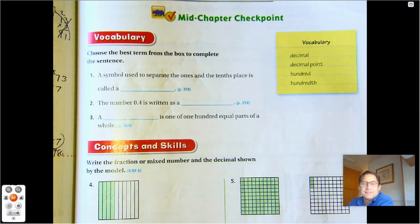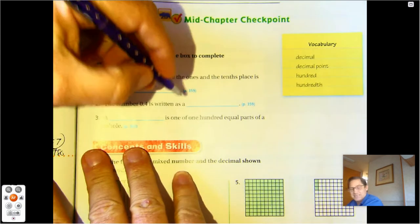So let's start with the vocabulary section. We're looking for the words decimal, decimal point, hundred, and hundredth. A symbol used to separate the ones and the tenths place is called a what? A symbol. That would be a decimal point.